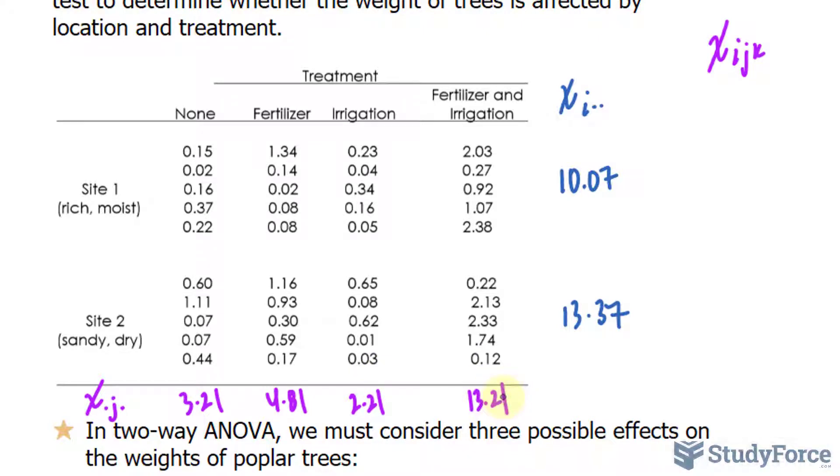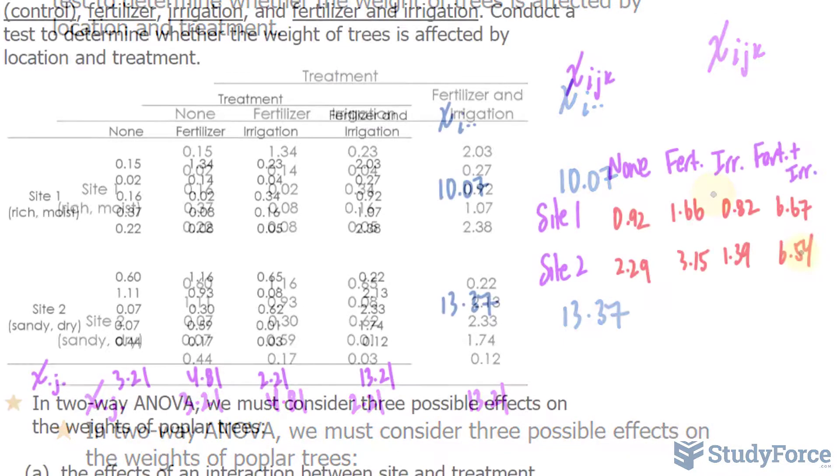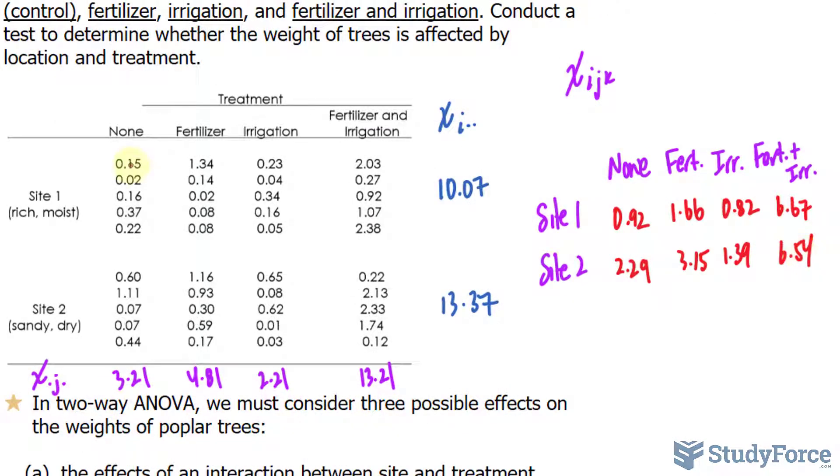You also need to find the sum of each individual cell. Rather than writing them down underneath, I'll create a small table here to summarize everything that I've found. So in case you're confused, adding these numbers up gives you 0.92, adding these gives you 1.66 and so on. The sum of all of these numbers combined, I'll write down underneath here, and that should be 23.44.